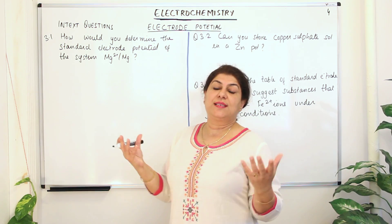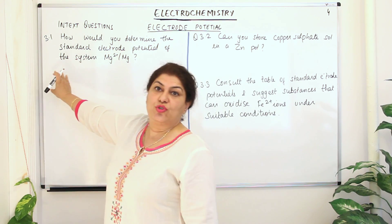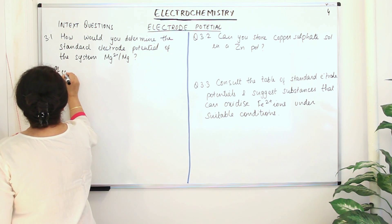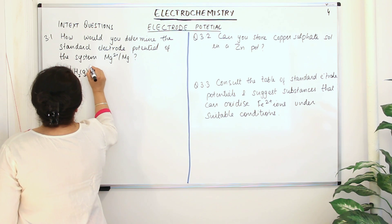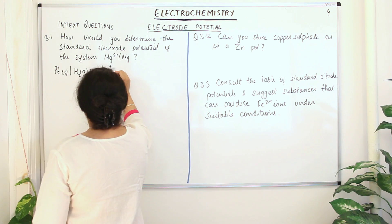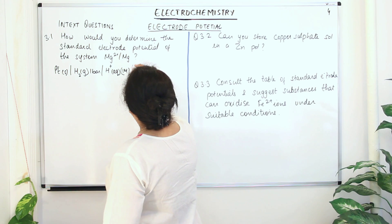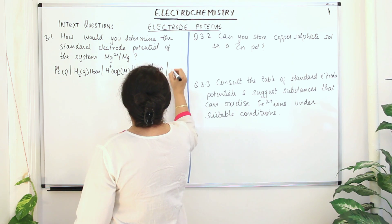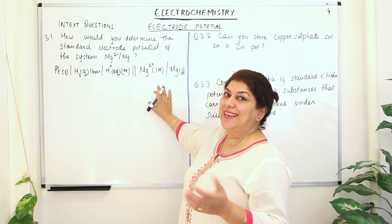But we don't know this because we've just taken a metal and we have the hydrogen electrode and we just want to see what the electrode potential is for that one. Assuming we are not aware, we take the hydrogen electrode to be the anode. The hydrogen electrode is represented as: Pt(s) | H₂(g, 1 bar) | H⁺(aq, 1 M), then the salt bridge, then Mg²⁺(1 M) | Mg(s).